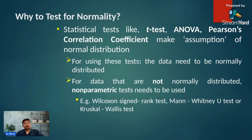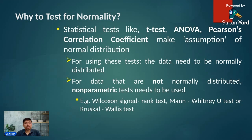Moreover, many statistical tests like t-test, ANOVA, and Pearson correlation coefficient assume normal distribution. So if you want to use these tests, your data should follow normal distribution. If your data is not normally distributed, you should use non-parametric tests such as the Wilcoxon Signed-Rank test, Mann-Whitney U test, or Kruskal-Wallis test. To decide which test to use, you have to check your data for normality, and if it fails that assumption, proceed with a non-parametric test.